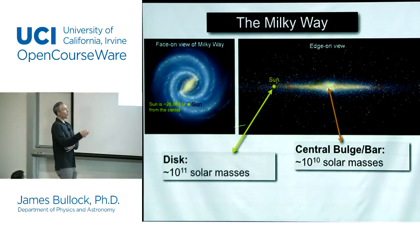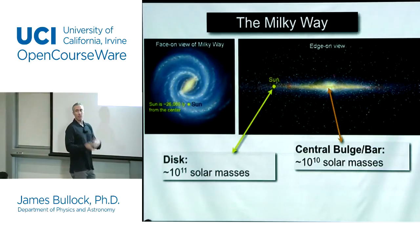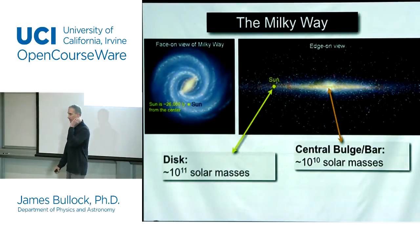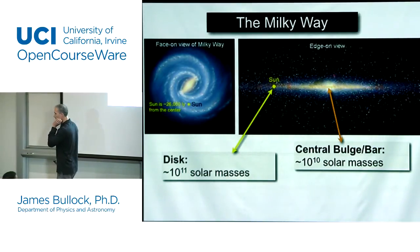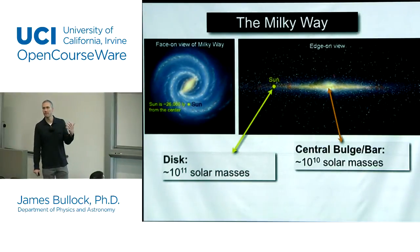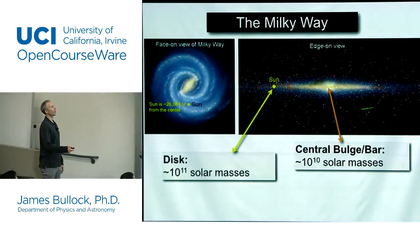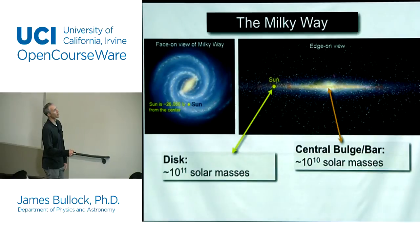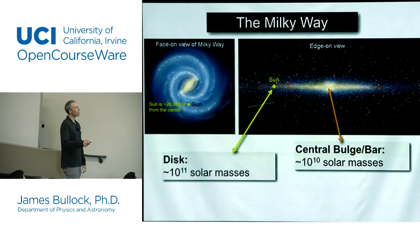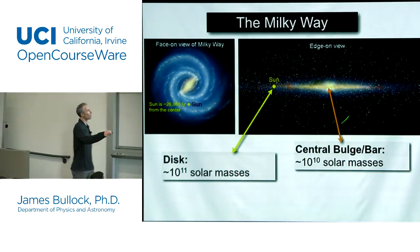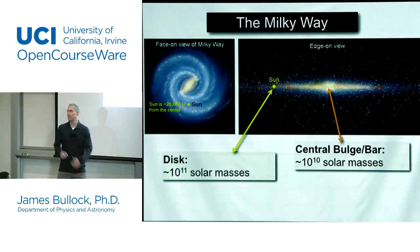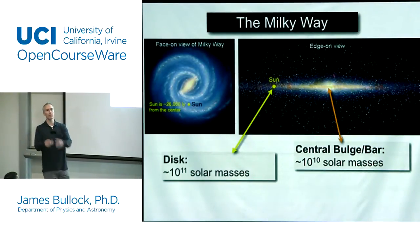The total mass of stars in the disk is about 10 to the 11 times that of the sun — so roughly 100 billion times the mass of the sun. There's about 10 times less than that in this middle ball — the bulge is about 10 billion times the mass of the sun.